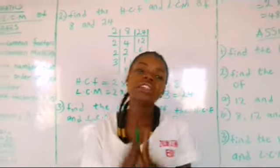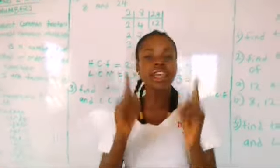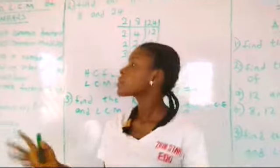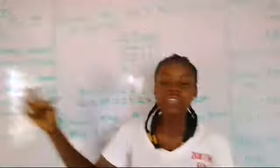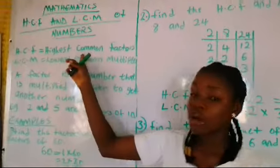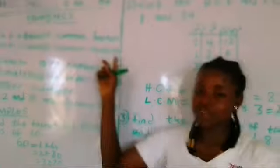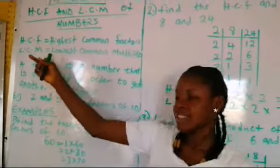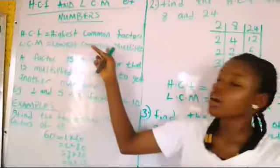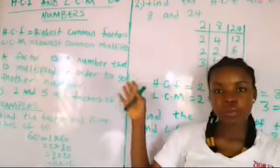We are going to be dealing on HCF and LCM of numbers. HCF simply means highest common factors and LCM simply means lowest common multiple.